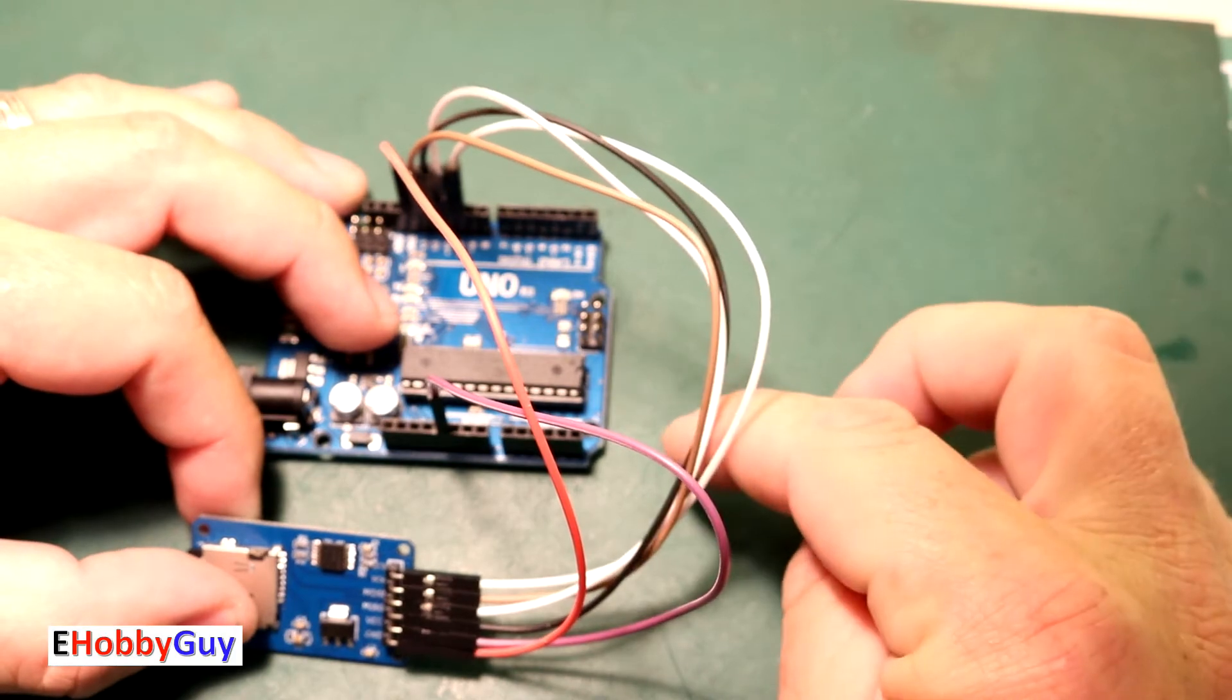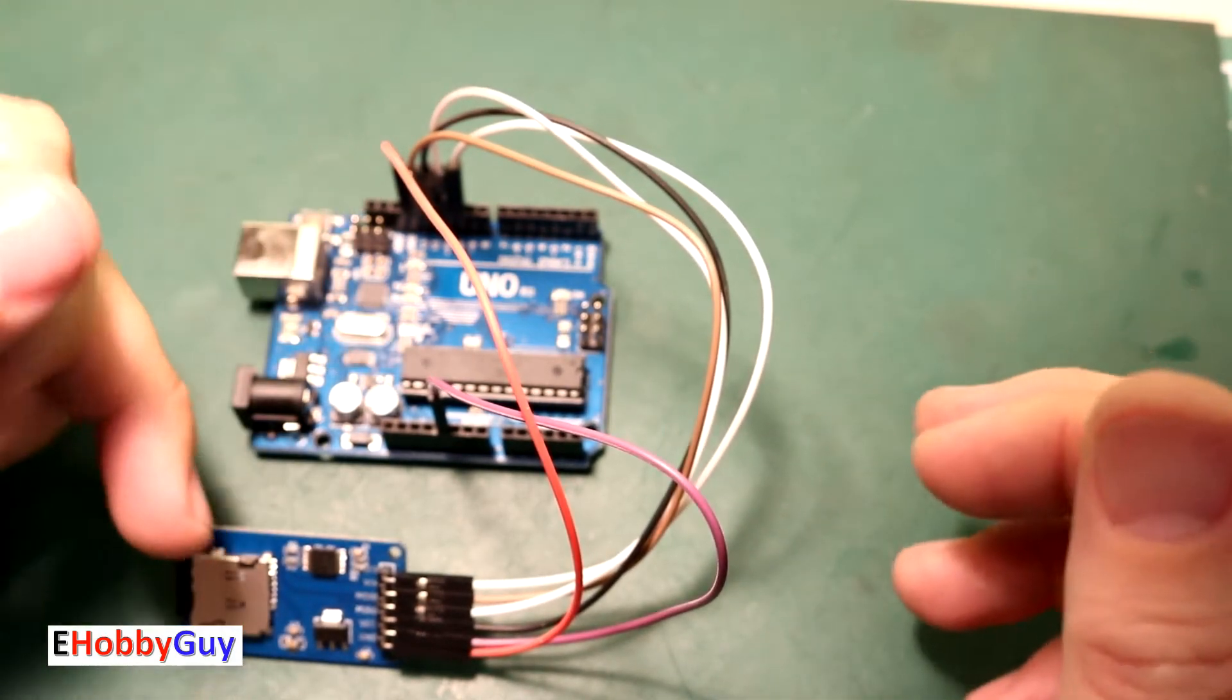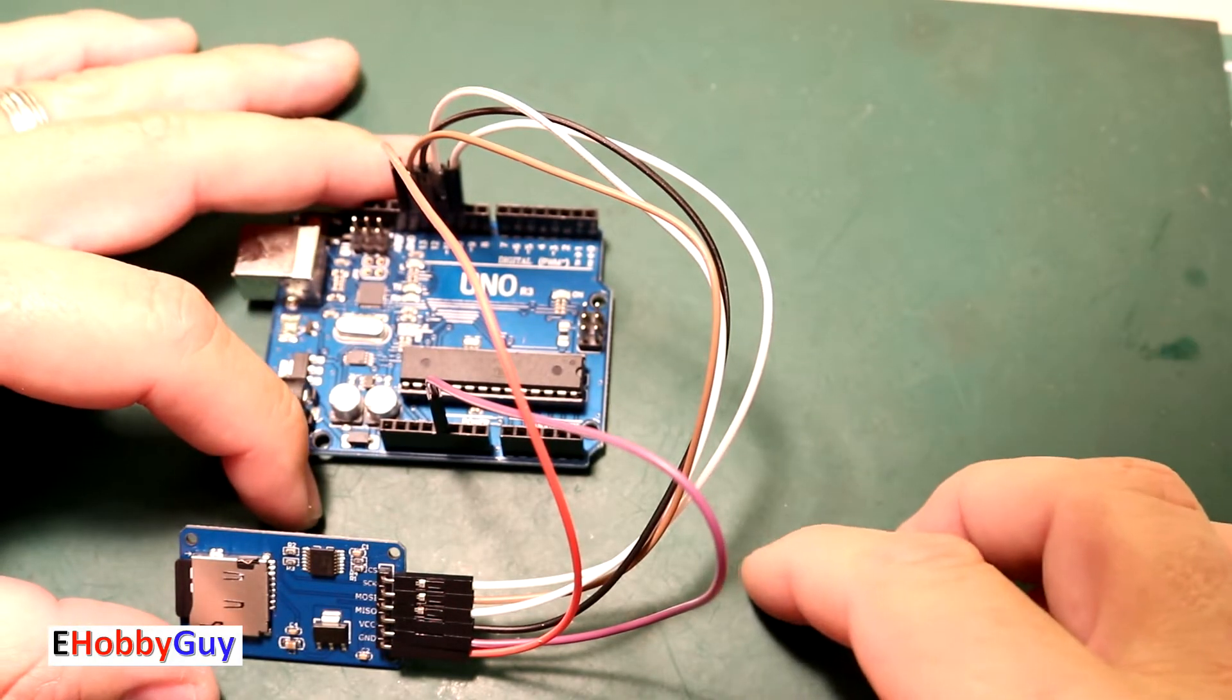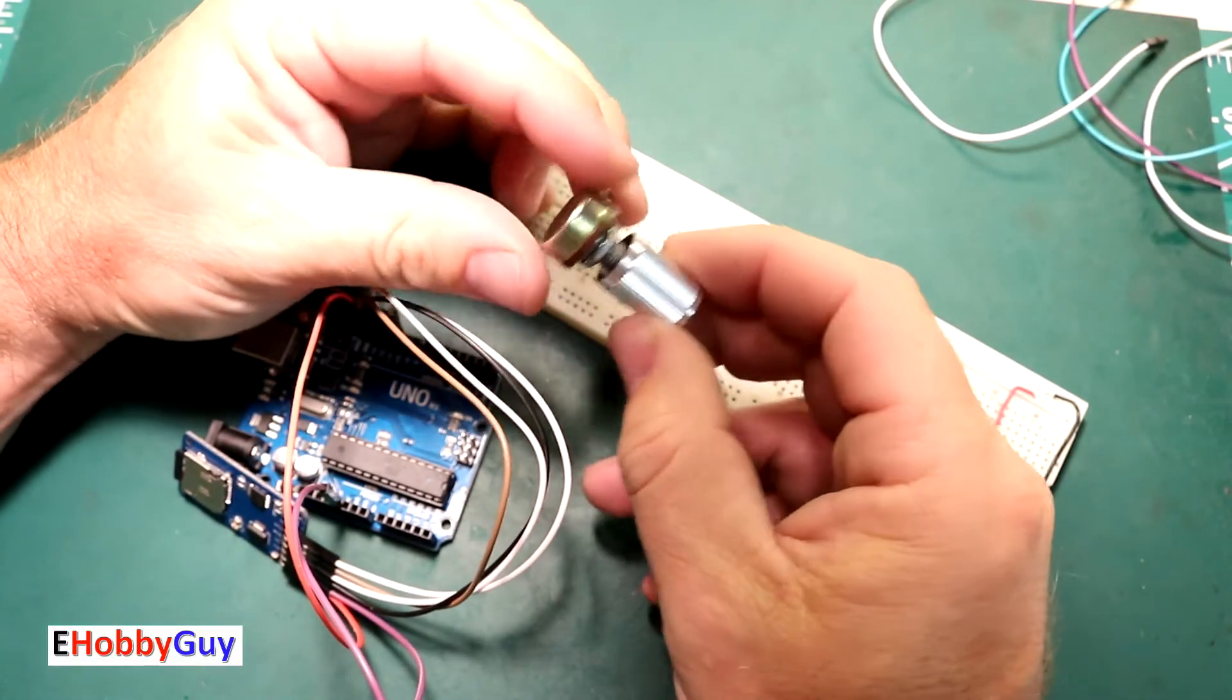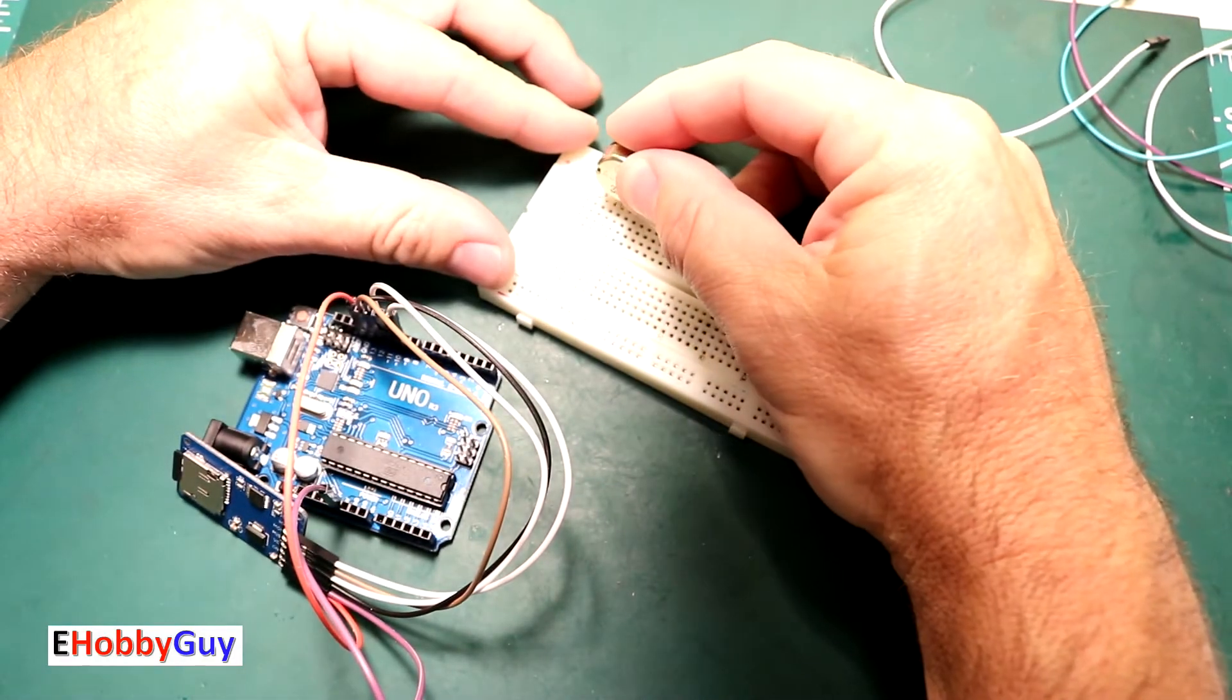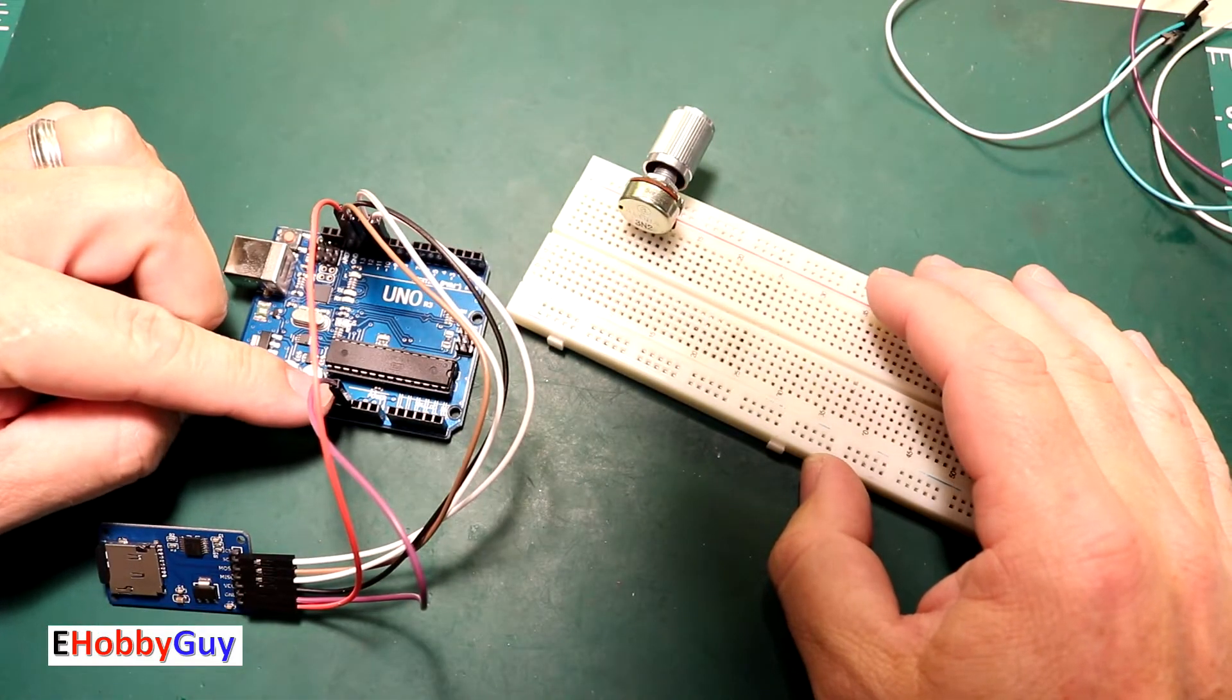First we're going to connect a potentiometer so we can vary a voltage in such a way that it can be read and will be visible for us to see. On a breadboard I have a 10k potentiometer with a little knob on it to make it easier.